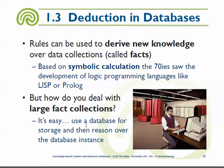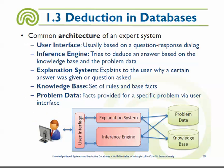Rules can be used to derive new knowledge over a collection of data — the facts — which is basically a traditional database storing what we know. Initially, in the 1970s, this was used with languages like Prolog, mainly for artificial intelligence. One of the key applications was expert systems.